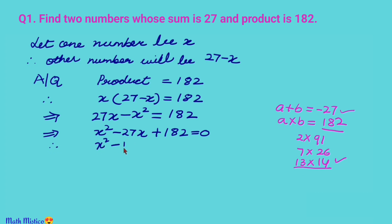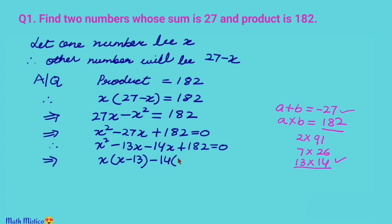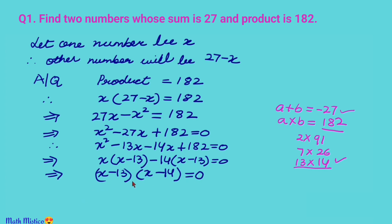Therefore x² − 13x − 14x + 182 = 0. Taking x common from the first two terms gives x(x − 13), and taking −14 common from the remaining terms gives −14(x − 13). So we have (x − 13)(x − 14) = 0. Since the product is zero, one of these factors must be zero, giving x = 13 or x = 14.